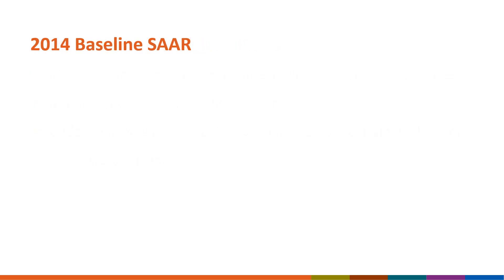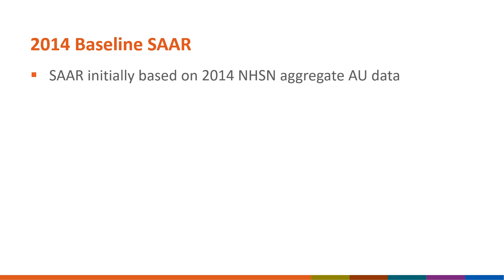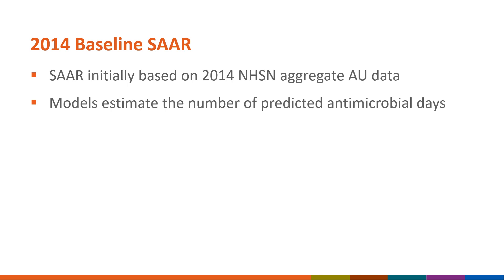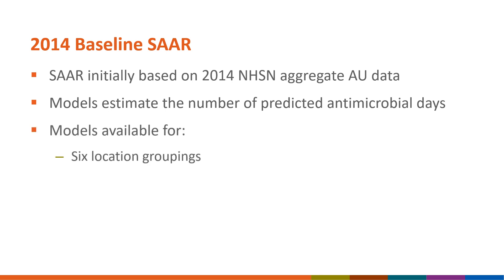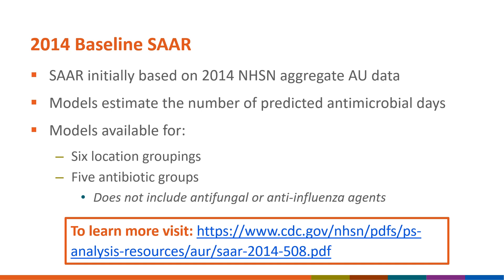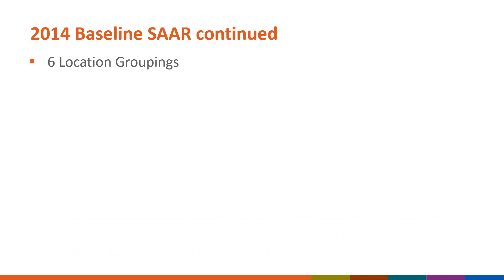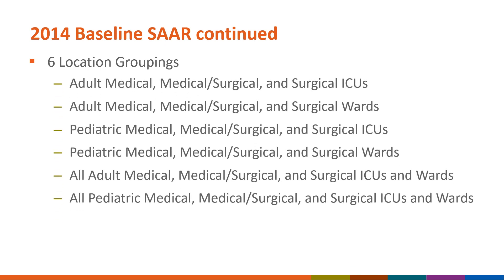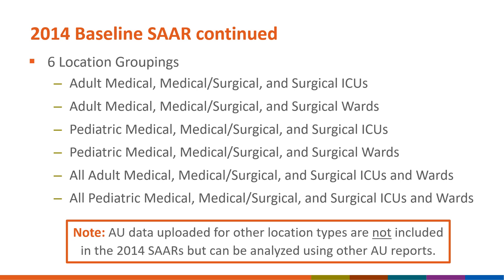The SAR was first developed using aggregated 2014 AU data submitted to NHSN from 77 participating acute care hospitals. These data were used in statistical models to predict antimicrobial days. These SAR calculations cover six location groupings and five antibiotic categories. They do not include antifungal or anti-influenza agents. You can refer to the 2014 SAR document to review the drugs included in each SAR category. AU data for other location types were not included in the 2014 SARs, but can still be analyzed using other AU report options within the NHSN application.